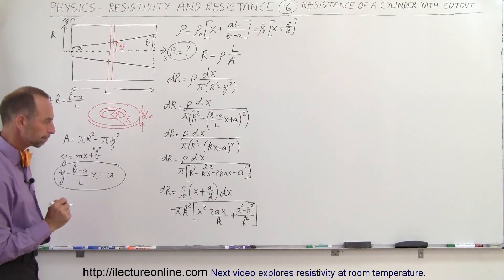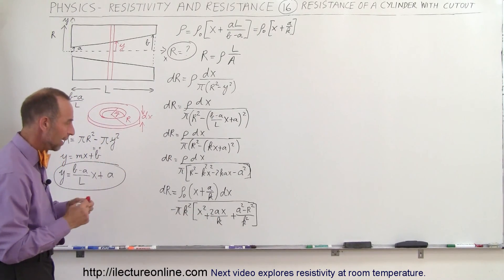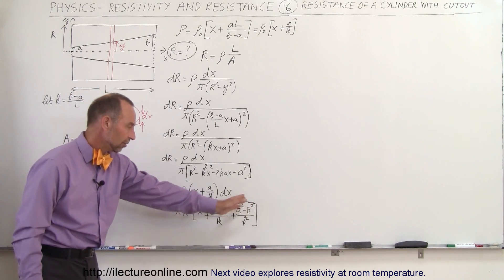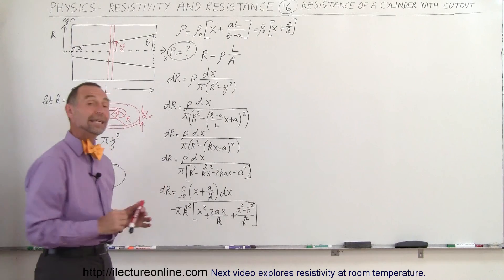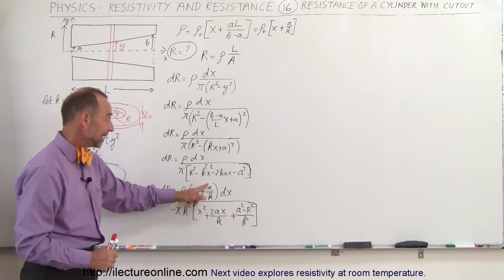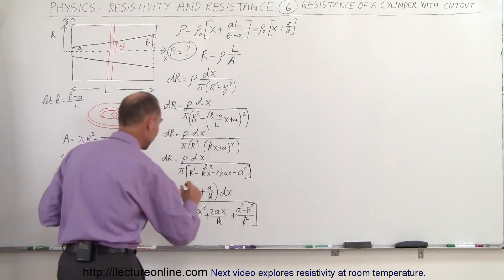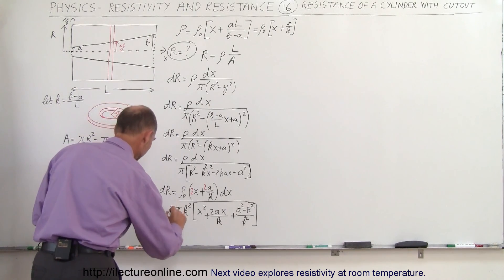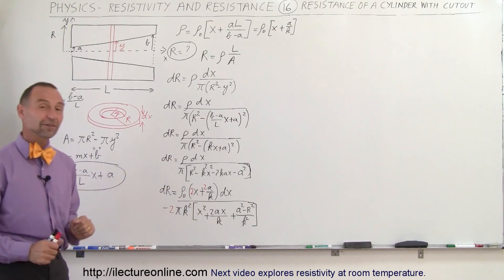Looking at the denominator, we have X squared, a 2A/K times X term, and a constant — just like a U substitution. If we let U equal the denominator, we need a DU in the numerator. The DU would require a 2 in front of X and a 2 in front of A/K. We multiply the numerator by 2 and compensate by multiplying the outside by 2, so now we have the proper differential and can integrate.